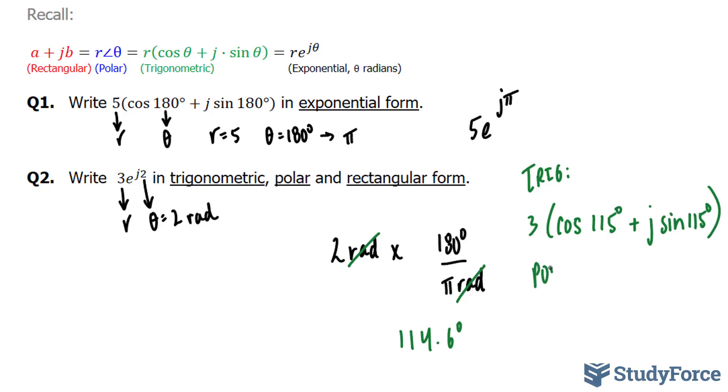In polar form, we have 3 at an angle of 114.6 degrees.